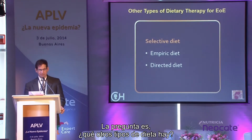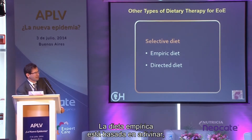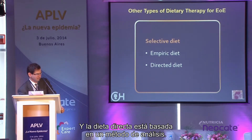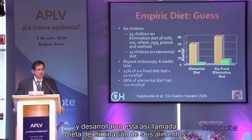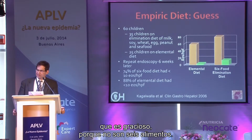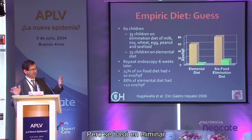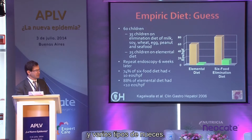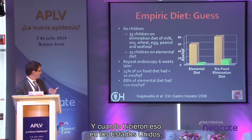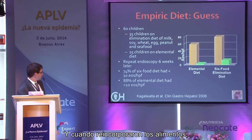There are two approaches to dietary management: the empiric diet — essentially guessing — and directed testing. The empiric approach, primarily developed by Amir Kagalwalla at Northwestern, is the six-food elimination diet, which despite its name involves removing 10–15 foods depending on how you count. They removed the top eight most common allergenic foods in the American diet: milk, egg, peanut, wheat, fish and shellfish, and tree nuts. About 75% of patients responded.